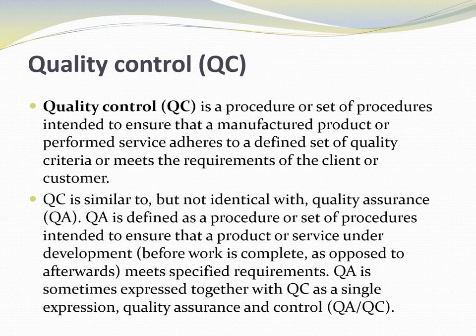Quality Control (QC) is a procedure or set of procedures intended to ensure that a manufactured product or performed service adheres to a defined set of quality criteria or meets the requirements of the client or customer. QC is similar to but not identical with Quality Assurance (QA). QA is defined as procedures intended to ensure that a product or service under development — while still being constructed — meets specific requirements. QA and QC are sometimes expressed together as 'quality assurance and quality control.'